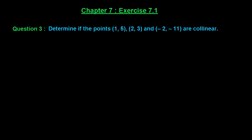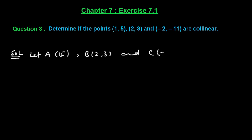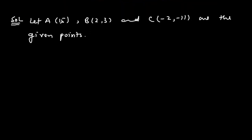Welcome friends, let us solve question number three of exercise 7.1 of chapter 7. The question says: determine if the points (1,5), (2,3), and (-2,-11) are collinear. Let us name these three points: let A be (1,5), B be (2,3), and C be (-2,-11). These are the given points. First of all, we shall find the distance between points A and B.